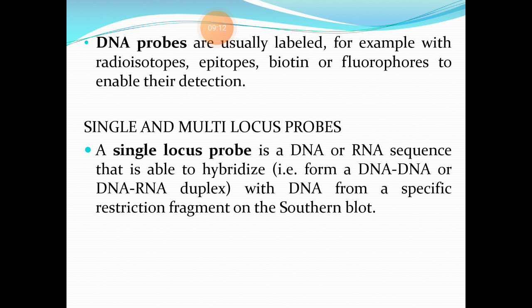Probes are of two types: single locus probes and multi-locus probes. A single locus probe is a DNA or RNA sequence that is able to hybridize — forming a DNA-DNA duplex or DNA-RNA duplex — with the DNA from a specific restriction fragment on the Southern blot.